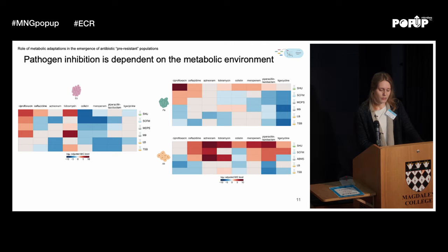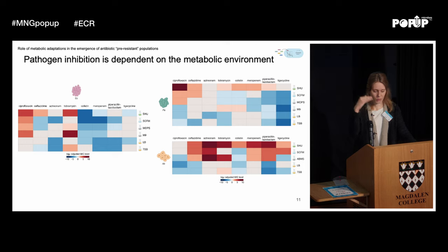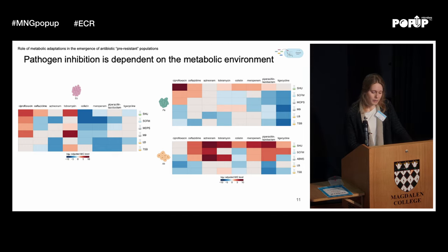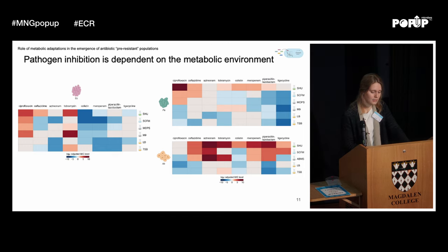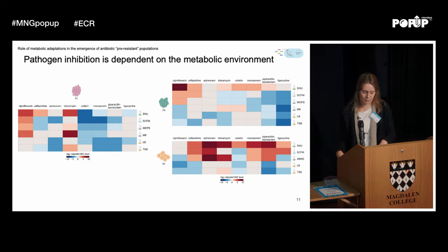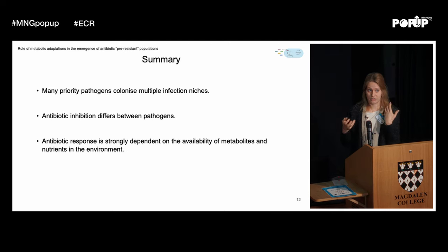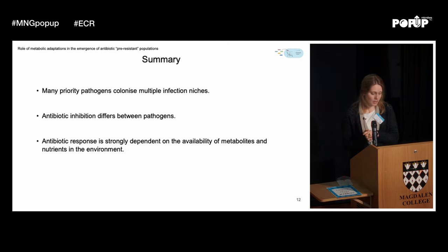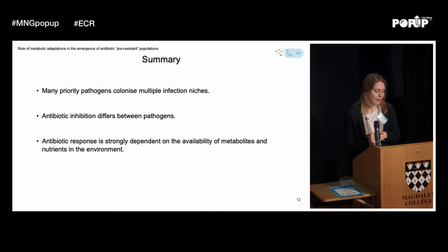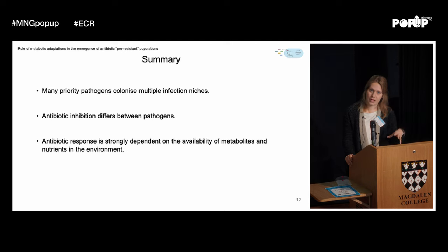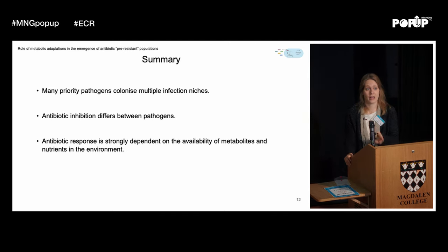This summarizes the first story: different pathogens colonize very different niches and we need to think about these niches when performing antimicrobial testing. Currently in hospitals, only one kind of medium is used to determine whether a strain is resistant or not. The big take-home message is that once pathogens have been grown and adapted to a different environment, the way they respond to the antimicrobial differs quite a lot — and this is something to keep in mind going forward.